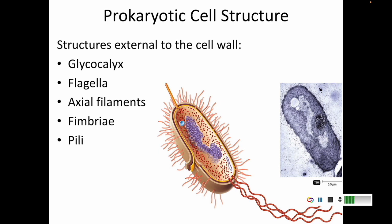We're going to start from the outside in — what kind of stuff do they have outside their cell, all the way into their cell wall. In our next video, we'll talk about what's inside their cell wall. Outside of the cell wall, they have things like glycocalyx, flagella, axial filaments, fimbriae, and pili.